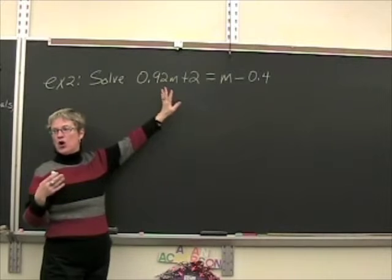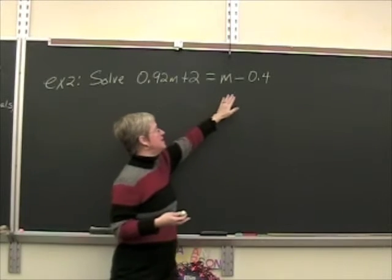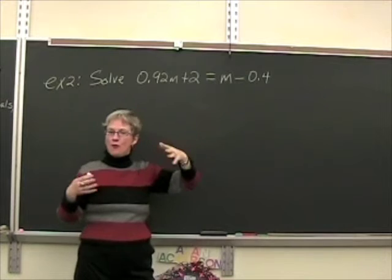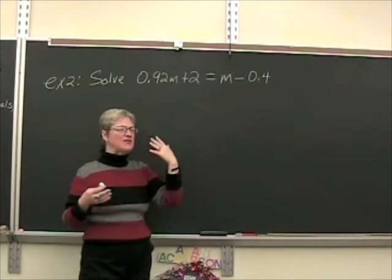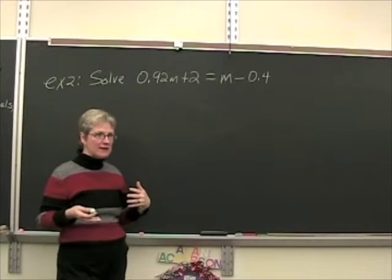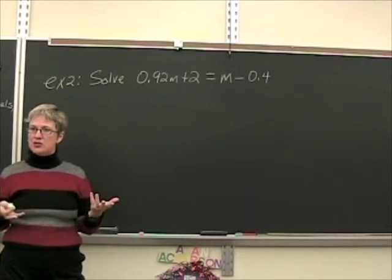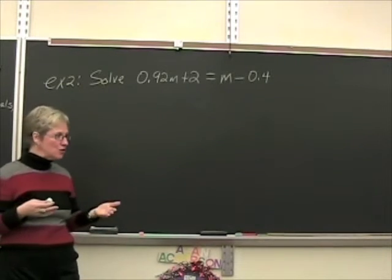In this equation, you can see that we have 92 hundredths and we also have 4 tenths. So we're looking at hundredths and tenths. We need to find a number that both 100 and 10 will divide into, and that number is 100.